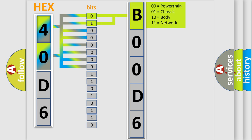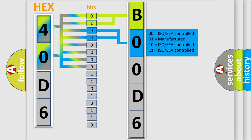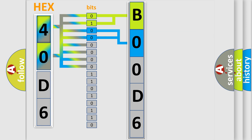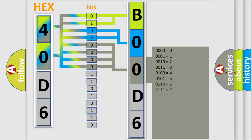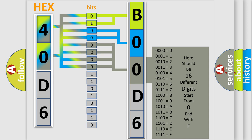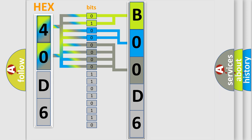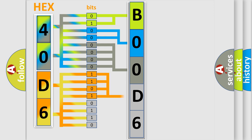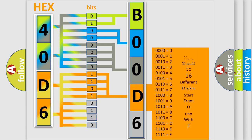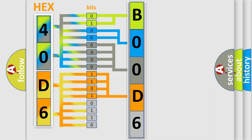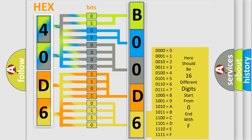By combining the first two bits, the basic character of the error code is expressed. The next two bits determine the second character. The last four bits of the first byte define the third character of the code. The second byte is composed of a combination of eight bits — the first four bits determine the fourth character, and the last four bits define the fifth character. A single byte conceals 256 possible combinations.